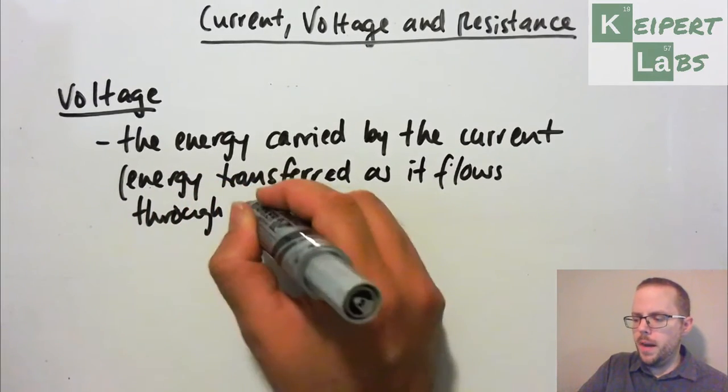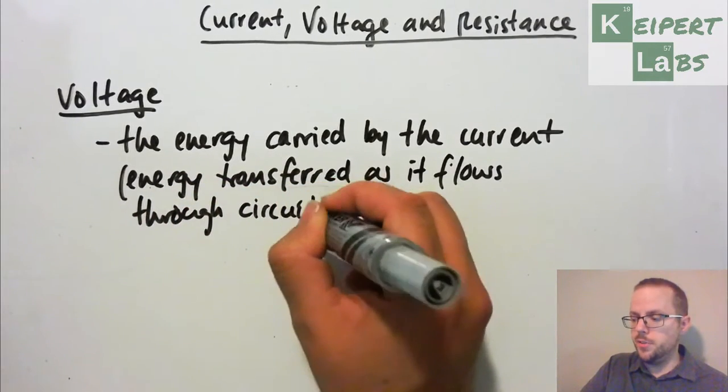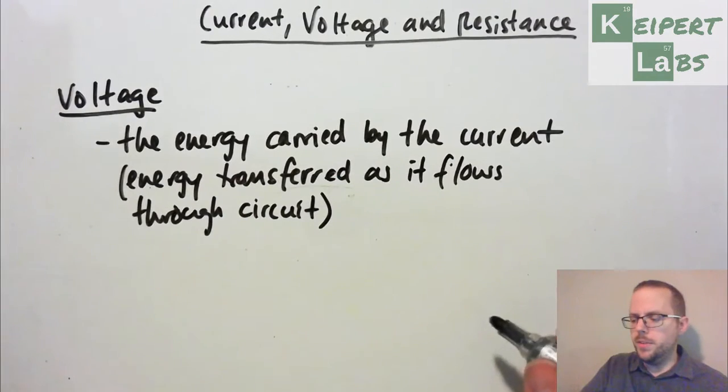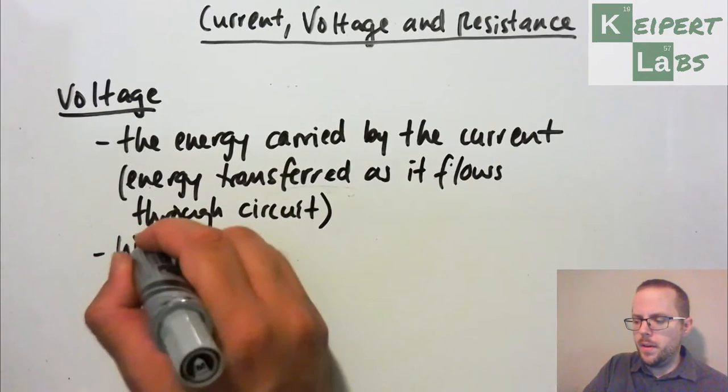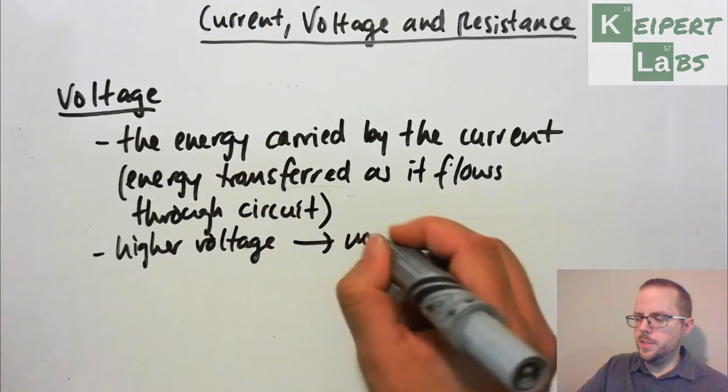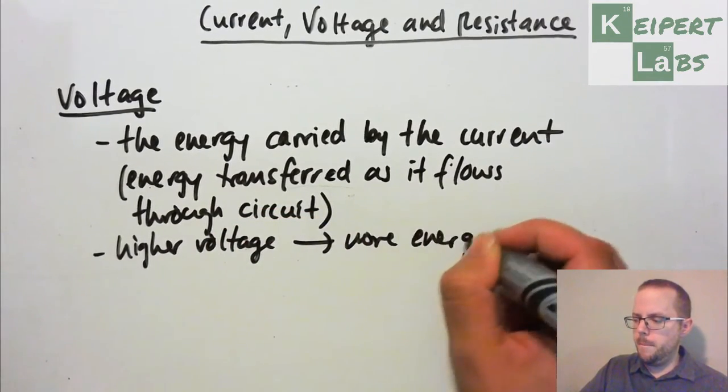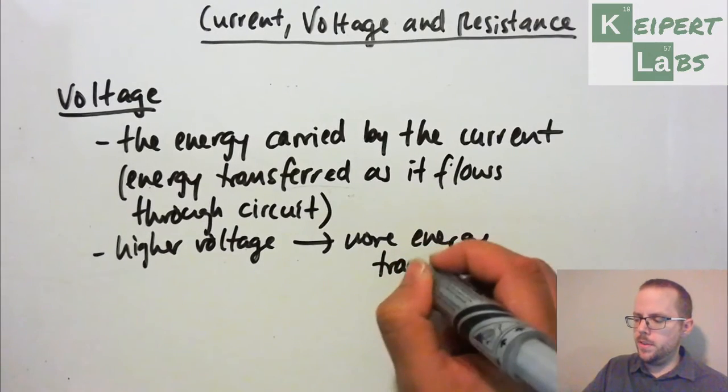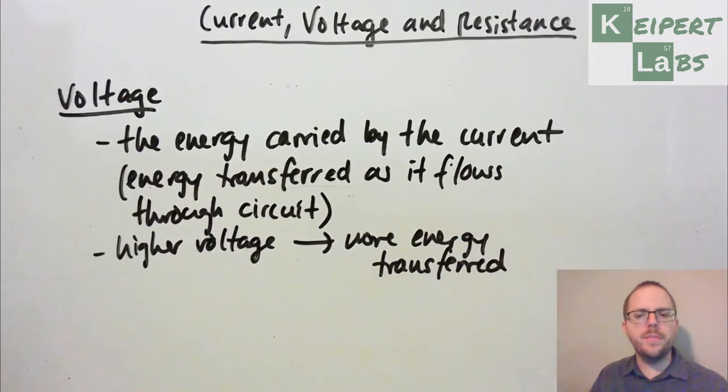Given we are thinking about this in the context of energy transfers, the higher the voltage leads to more energy transferred. So you would have experienced that if you had a chance to use the power packs as you turn the voltage up, things that are connected to that circuit get more energy going through them. Like a light globe will glow brighter at higher voltages.